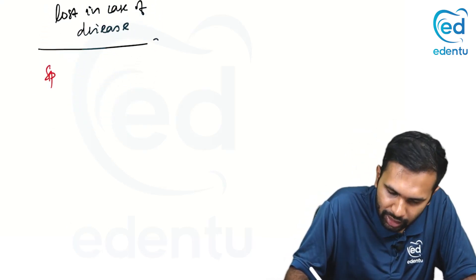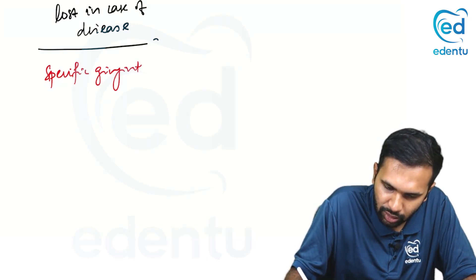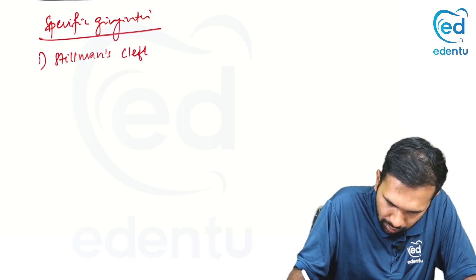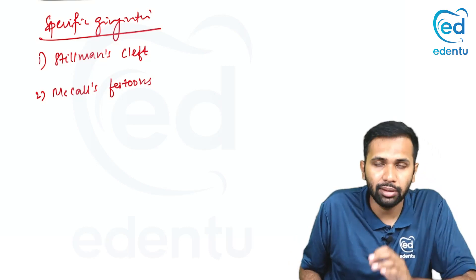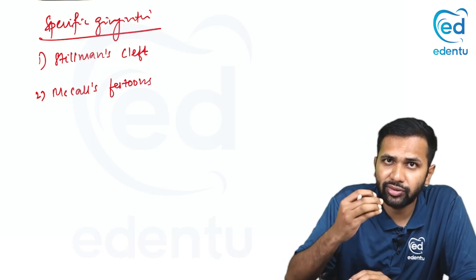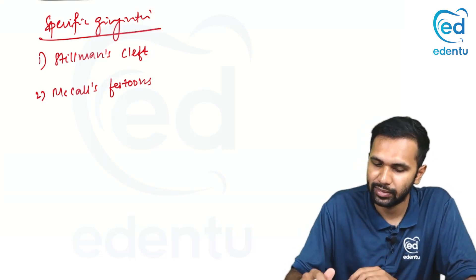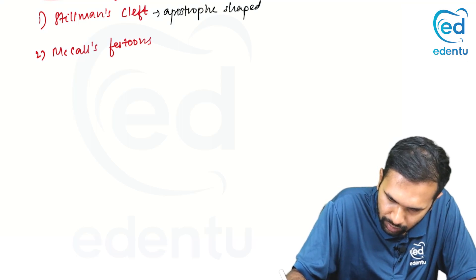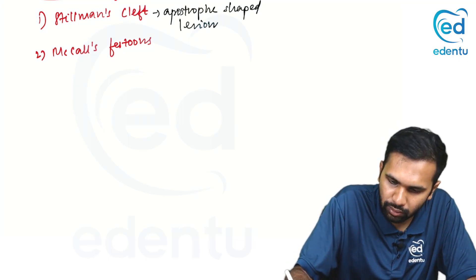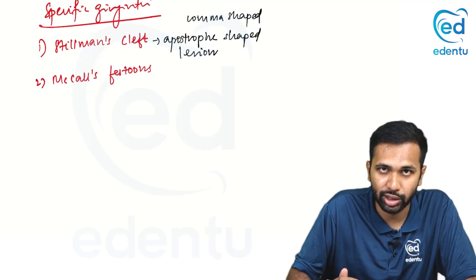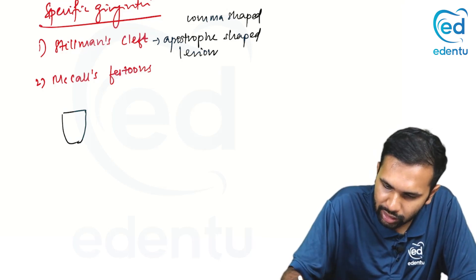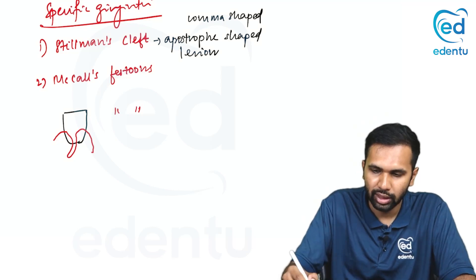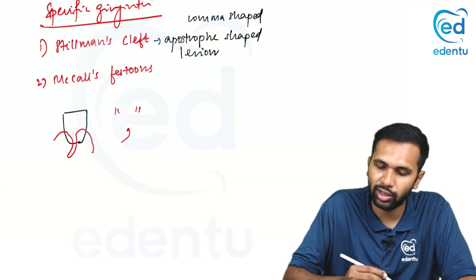There are some specific gingival lesions called Stillman's cleft and McCall's festoons. In Stillman's cleft, it is an apostrophe-shaped or comma-shaped gingival recession — the gingiva forms a cleft in a comma or apostrophe shape around the tooth. This specific lesion is referred to as Stillman's cleft.